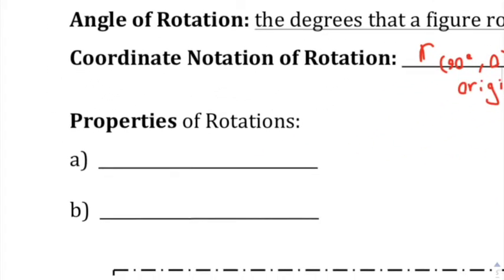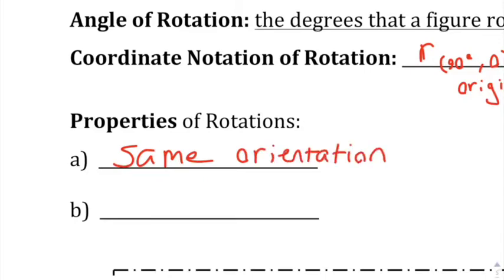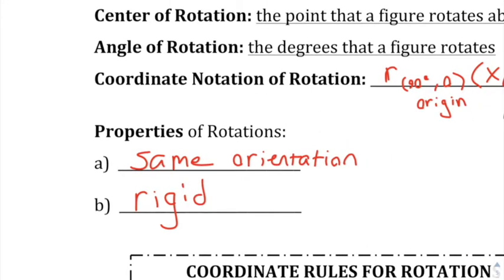Properties of rotations: it keeps the same orientation — it's not going to reverse the letters or the points of the shape. If it's ABC going clockwise around a figure, it'll still be ABC going clockwise. The only thing that really changes orientation that we've gone over is reflections. Rotations are also rigid, which means they produce congruent figures — all the side lengths and angles stay the same.